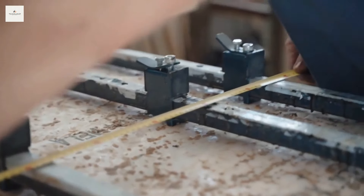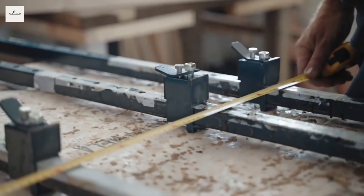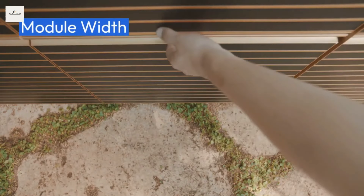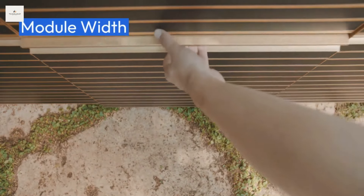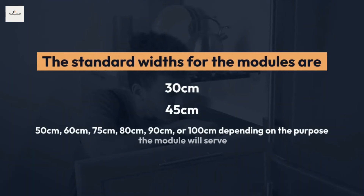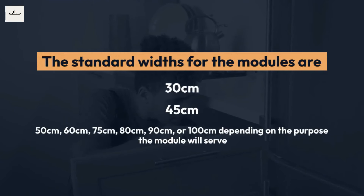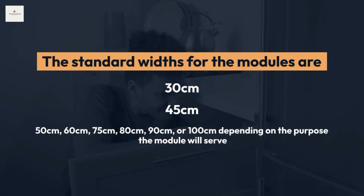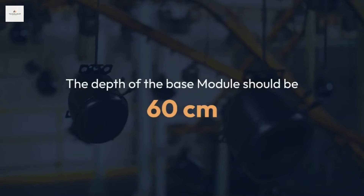The standard module measurements are directly related to the cost of the kitchen and determine if the kitchen can be made or not. Module width: the standard widths for the modules are 30 cm, 45 cm, 50 cm, 60 cm, 75 cm, 80 cm, 90 cm, or 100 cm, depending on the purpose the module will serve.